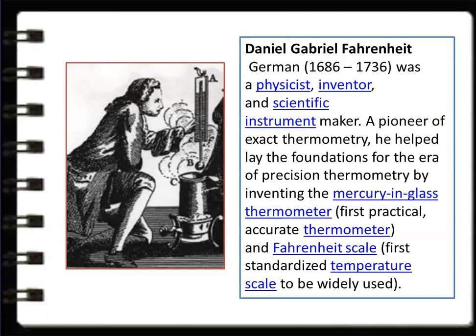Daniel Gabriel Fahrenheit was a German physicist, inventor, and scientific instrument maker. He is a pioneer of exact thermometry and helped lay the foundations for the era of precision thermometry by inventing the mercury-in-glass thermometer — the first practical, accurate thermometer. The Fahrenheit scale was the first scale used for measuring temperature and was widely used.